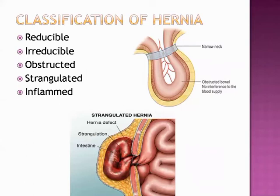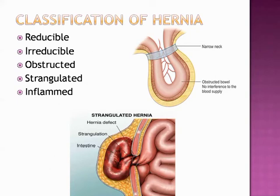Irrespective of the site, hernia can be classified into five types: reducible, irreducible, obstructed, strangulated, and inflamed hernia. A hernia is said to be reducible when, as soon as the patient lies down, the hernia disappears or it can be reduced manually. In cases of enterocele, the first portion is more difficult to reduce compared to the last, and it always reduces with a gurgling sound because it contains intestine.